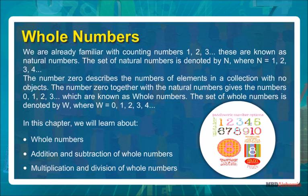The number zero describes the number of elements in a collection with no objects. The number zero together with the natural numbers gives the numbers zero, one, two, three, and so on, which are known as whole numbers.